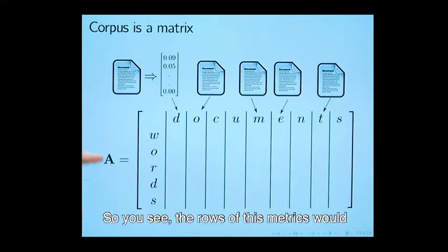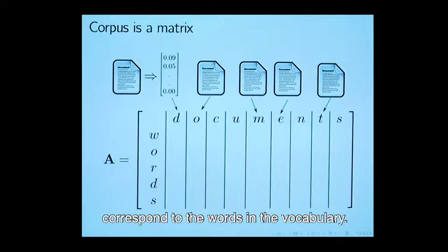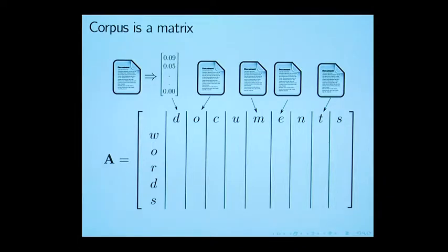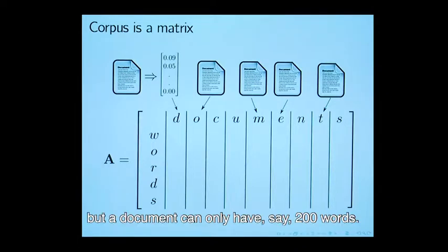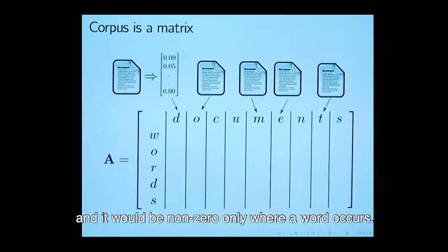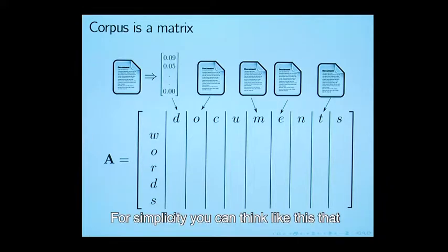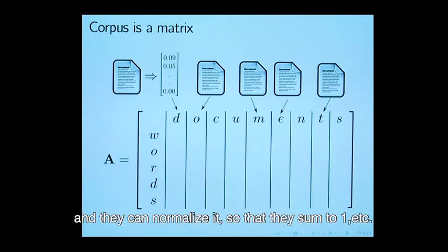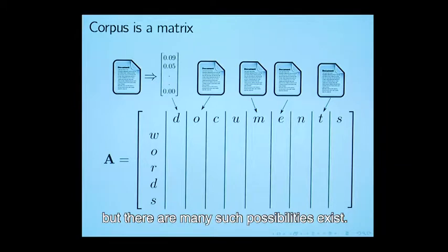The rows of this matrix would correspond to the words in the vocabulary. A vocabulary may have 10,000 words, but a document can only have say 200 words. This means in this column there will be lots of zeros and it would be non-zero only where a word occurs. For simplicity you can think like this, that every time you can count the number of times a word occurs and they can normalize it so that they sum to 1. But there are many such possibilities exist.